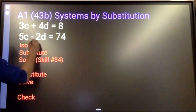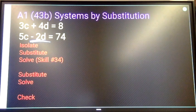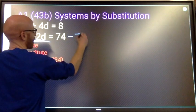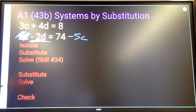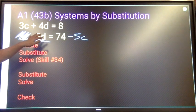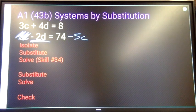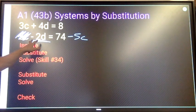I'm going to try to isolate this guy. So subtract 5c from both sides. So again, why am I trying to isolate this one? For me, it's easy to divide by 2, and in this case, divide by negative 2.